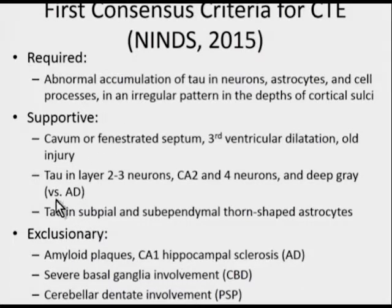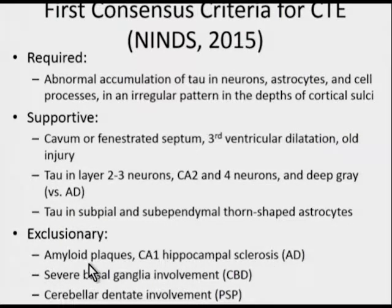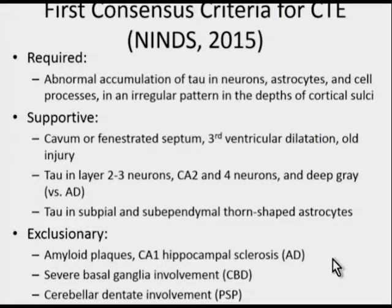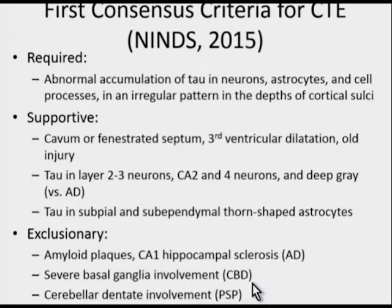Another supportive but not entirely pathognomonic feature is the presence of subpial and subependymal thorn-shaped astrocytes in CTE. If abundant amyloid plaques or CA1 disease with hippocampal sclerosis is found, Alzheimer's disease should be considered. Severe basal ganglia involvement would suggest corticobasal ganglionic degeneration, and cerebellar dentate involvement might suggest PSP rather than CTE. Cases with features of both will be addressed in more refined criteria from subsequent meetings. This is a fast-moving field to watch over the next few years.